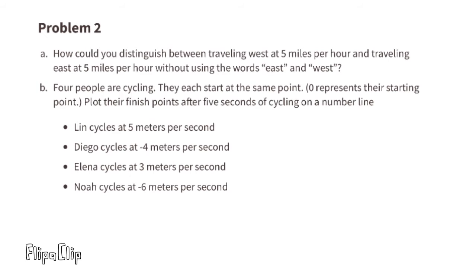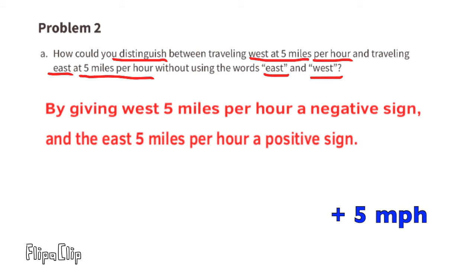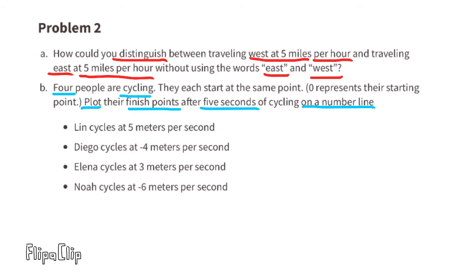Problem 2a: How could you distinguish between traveling west at five miles per hour and traveling east at five miles per hour without using the words east and west? By giving west five miles per hour a negative sign and east five miles per hour a positive sign.